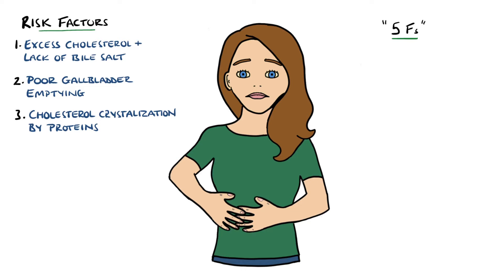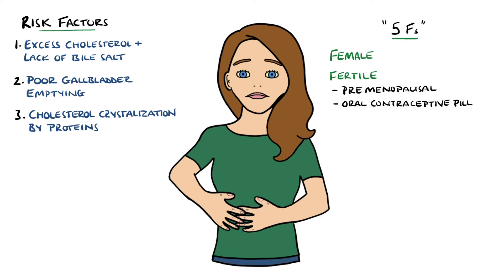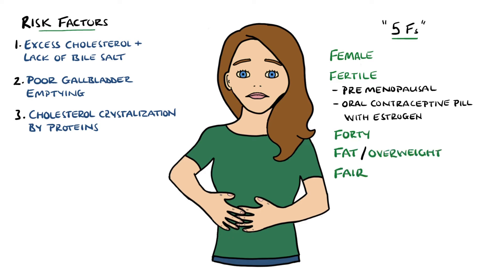You may have heard of the 5 F's of gallbladder disease, a mnemonic to remember the risk factors for gallstone formation. These are being female; fertile - meaning pre-menopause or on the oral contraceptive pill containing estrogen, as estrogen can increase cholesterol levels in bile as well as decreasing gallbladder motility; 40 or older; fat or overweight; and fair, as it is found more commonly in Europeans and North Americans.